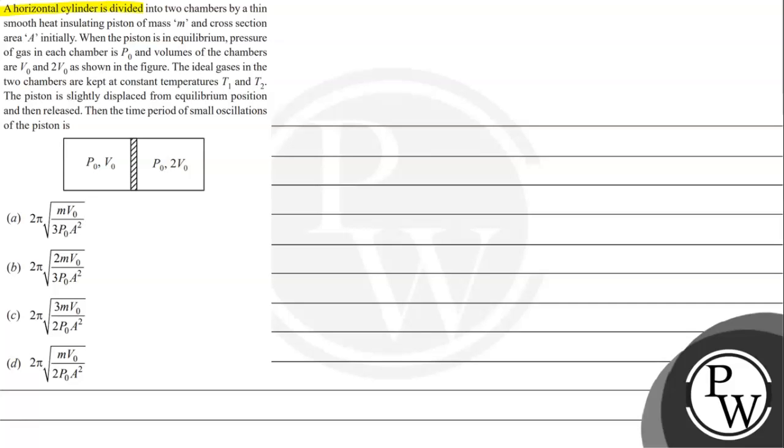The question says a horizontal cylinder is divided into two chambers by a thin smooth heat insulating piston of mass M and cross section area A. Initially, when the piston is in equilibrium, pressure of gas in each chamber is P0 and volumes of the chambers are V0 and 2V0 as shown in figure.